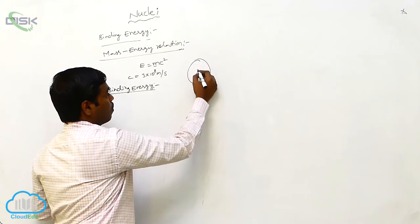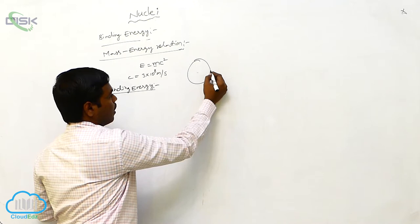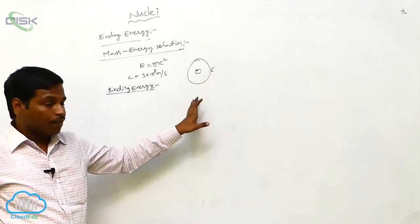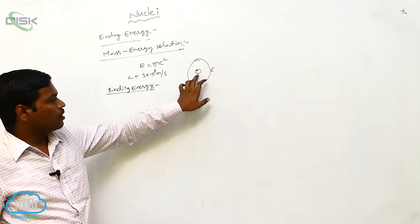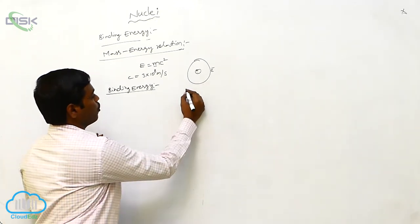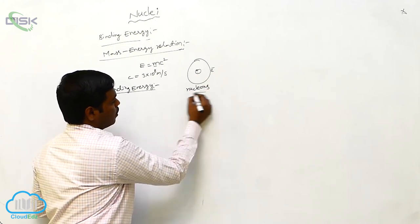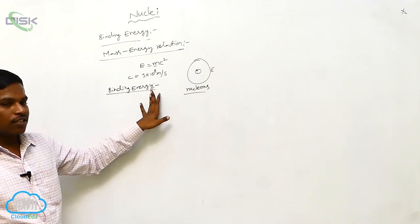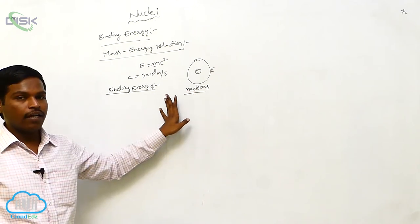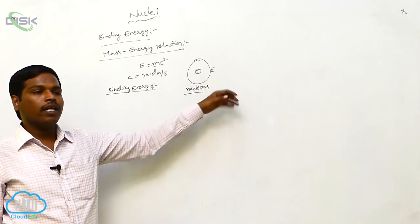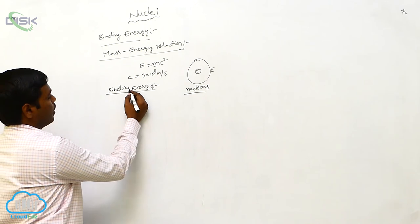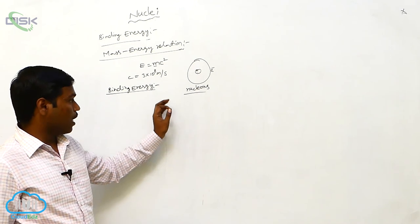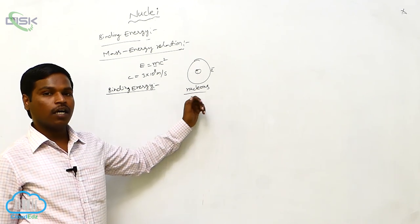We already know protons are present inside the nucleus and electrons revolve around the nucleus. The particles present inside the nucleus are called nucleons. Binding energy is the energy required to separate the nucleons into their constituents.